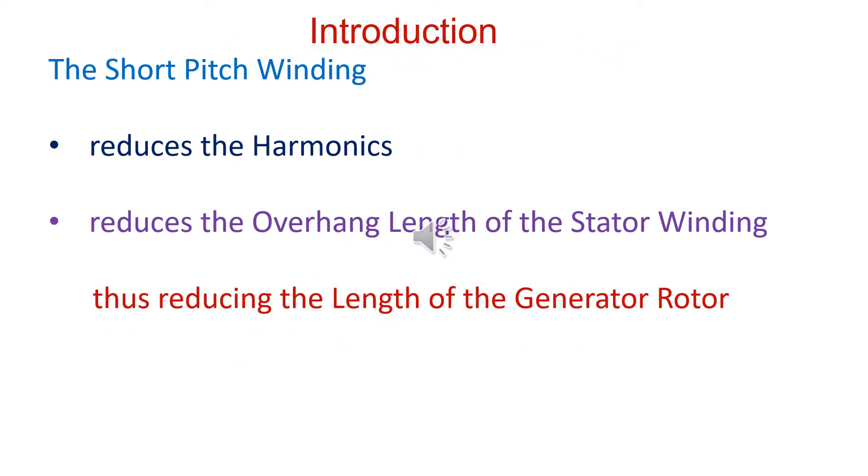Though KVA rating of the electrical generator is slightly reduced due to short pitch winding, the advantages are many. Short pitch winding reduces harmonics. It also reduces overhang length of the stator winding, thus reducing length of the generator.